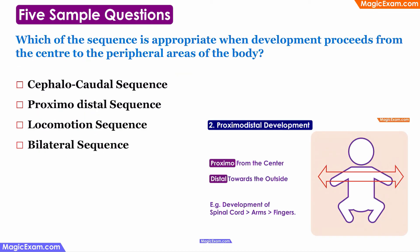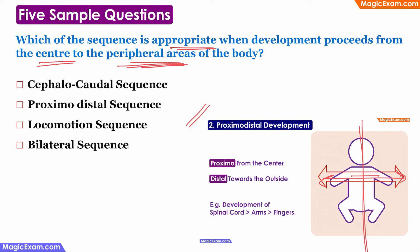The next question asks: 'Which of the following sequence is appropriate when development proceeds from the center to the peripheral areas of the body?' Previously we saw that proximodistal development starts from the center of the body and moves towards the peripheral or outer areas. Development starts from the spinal cord, moves towards the arms, and then moves towards the fingers. So development proceeds from center to peripheral areas — this is proximodistal development, and therefore option two is the correct answer.